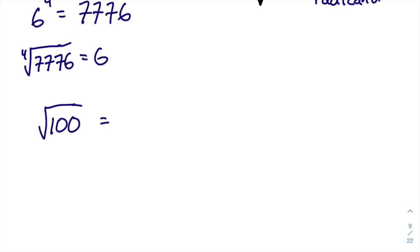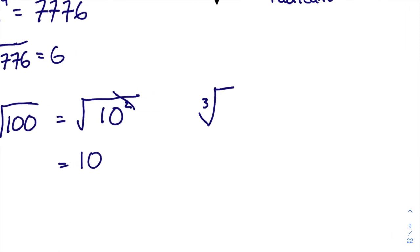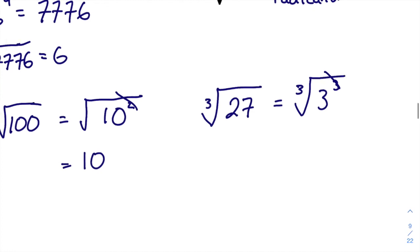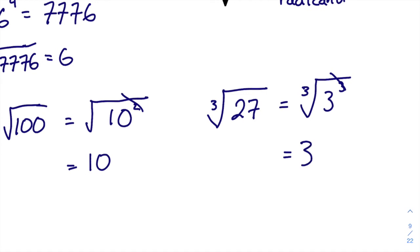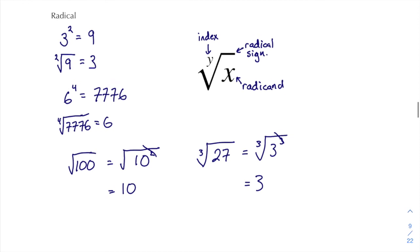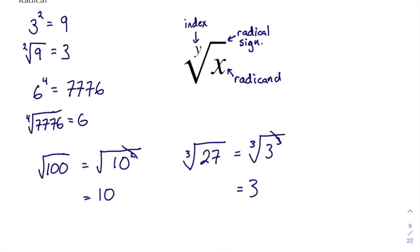Six to the fourth power is seven thousand seven hundred and seventy-six. The fourth root of seven thousand seven hundred and seventy-six equals six — it just undid what that fourth power did. For example, the square root of one hundred equals the square root of ten-squared, and the square root cancels the squared to leave ten. The cube root of twenty-seven equals the cube root of three-cubed — those cancel and we're left with three. You can see how the radical cancels out the exponent. That's what a radical is, what it does, and those are the names of the different parts.